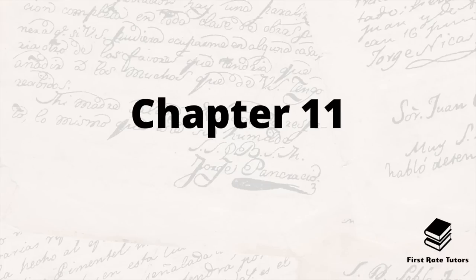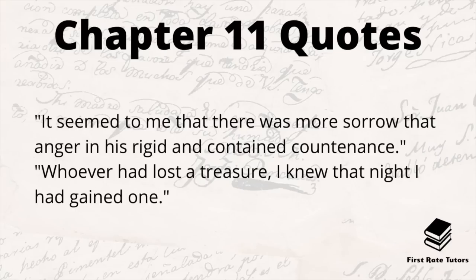Chapter eleven, The Great Agra Treasure, sees the captured Small given a cigar and a drink by Holmes, who begins to question him. Small reveals that the key to the treasure chest is at the bottom of the river. Watson is entrusted to bring the chest to Miss Morstan, tells her of their adventure, and presents her with the treasure chest. Using a poker from the fireplace Watson opens the chest and they discover it is empty. Without thinking he exclaims 'thank God,' admits he loves her, and feeling her riches are no longer an obstacle declares this. She replies 'then I say thank God too' and Watson draws her close. Key quotes: 'it seemed to me that there was more sorrow than anger in his rigid and contained countenance' and 'whoever had lost a treasure, I knew that night I had gained one.'